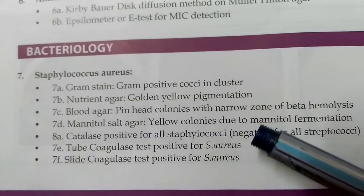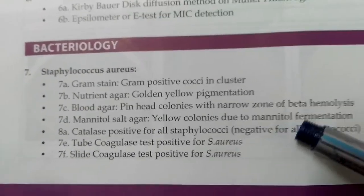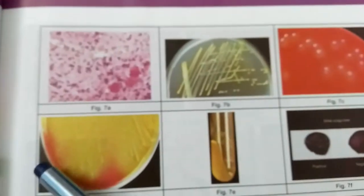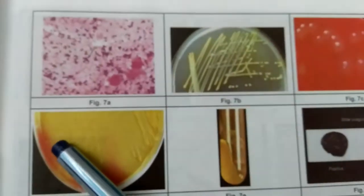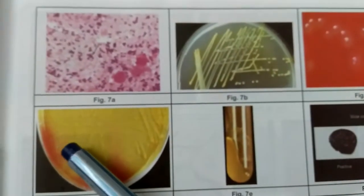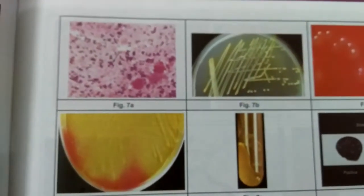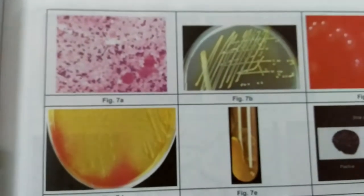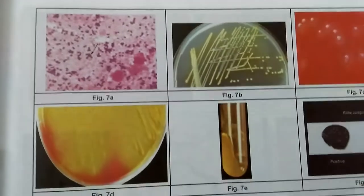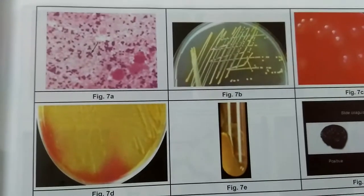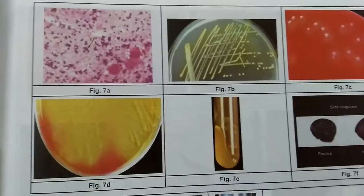Image 7d is mannitol salt agar showing yellow colonies due to mannitol fermentation. As you can see, these are the characteristic yellow colonies on mannitol salt agar.